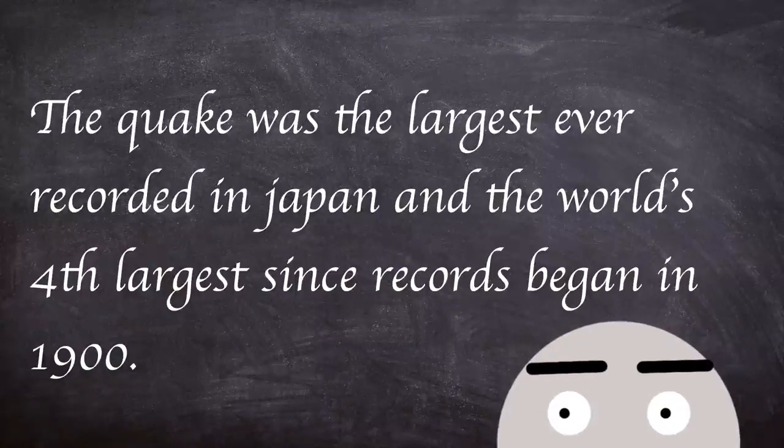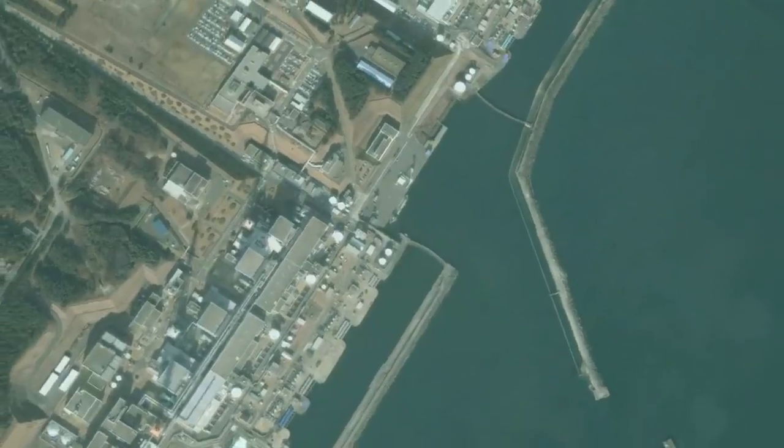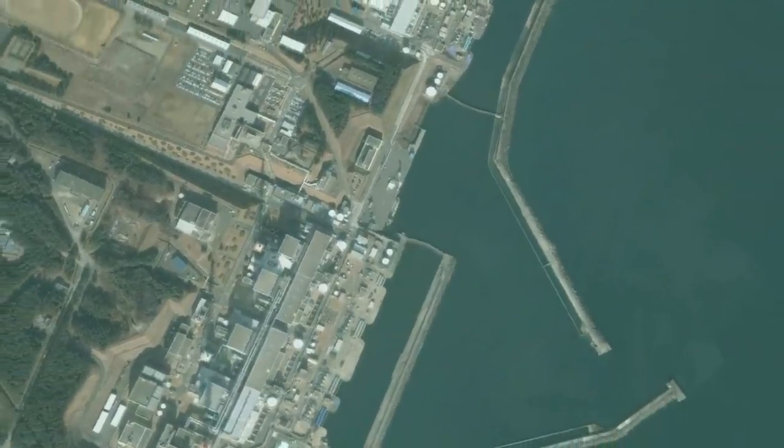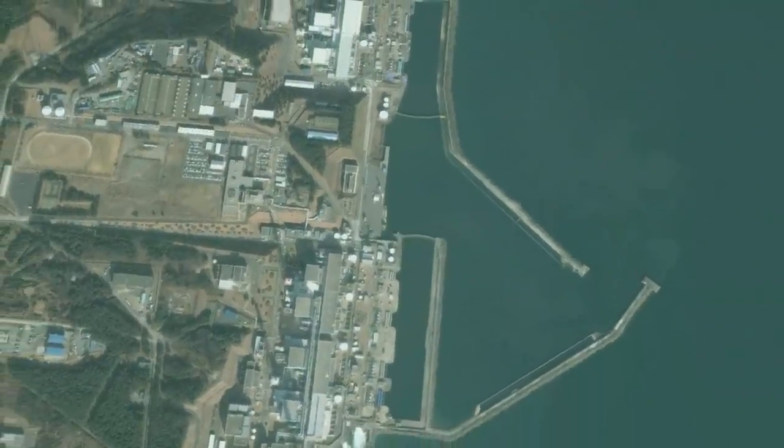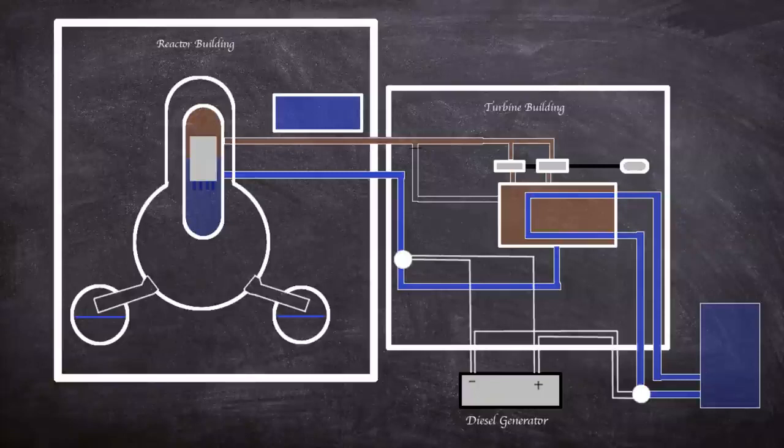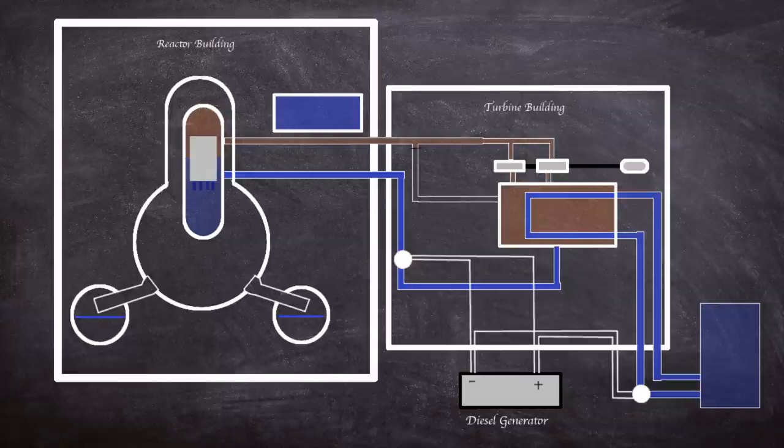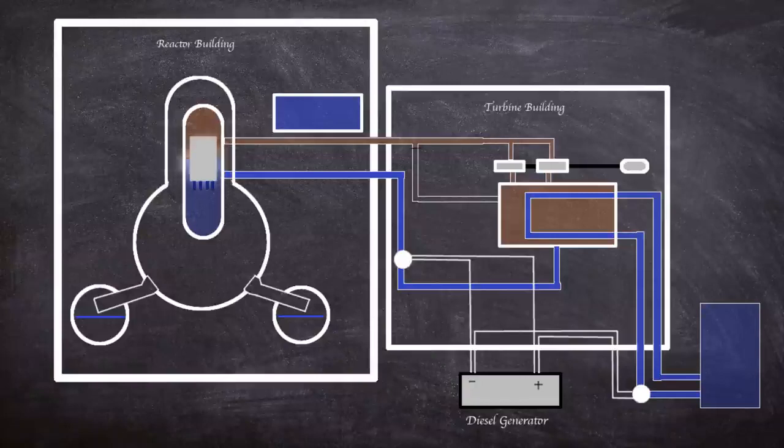At the time of the earthquake, sensors at the plant detected ground movement and initiated a scram in the three operating reactors. This was built into the design and controlled reactivity. Off-site power grid connections were lost during the earthquake. Emergency systems needed power from the 13 on-site generators. Even after shutdown, reactors needed power to pump coolant through the cores, as decay heat is strong enough to cause fuel element melting.